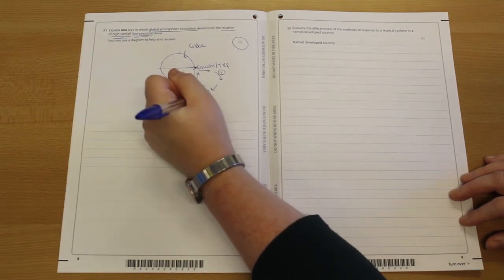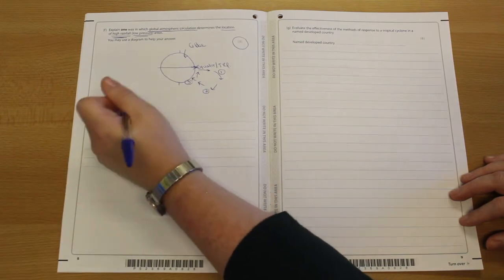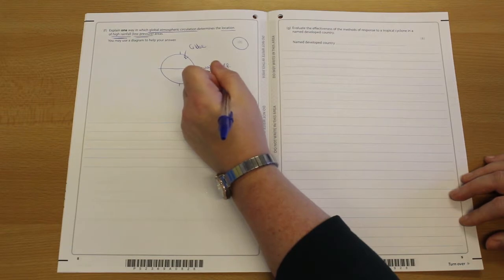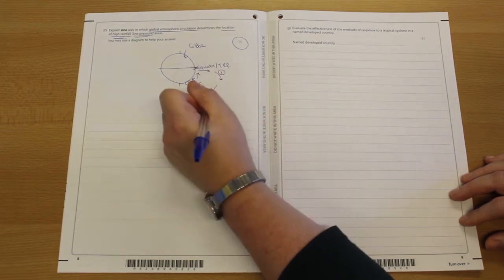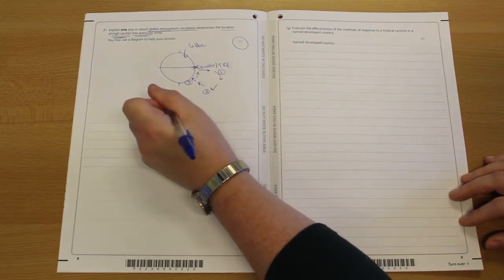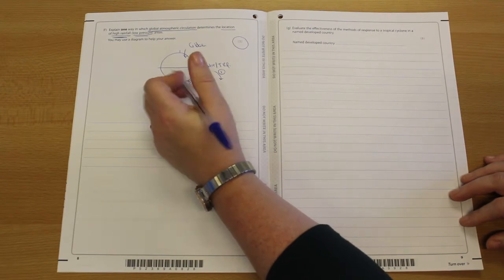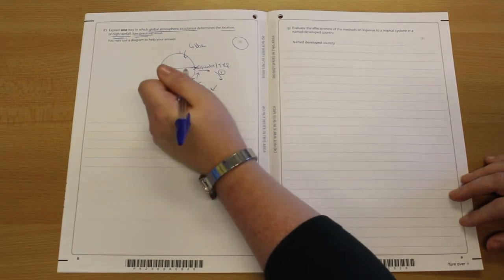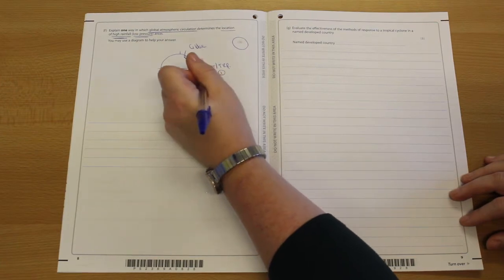But by numbering this diagram, and perhaps adding my, if I'm perhaps drawing it a bit more over here, it might have been an idea, but then adding in, this is what's happening here, that's what's happening there, that's what's happening there, I am going to pick up three. I'll pick up one on its own for a well-drawn and labelled diagram.